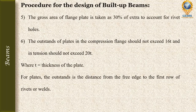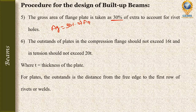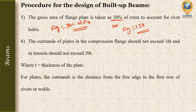After finding the approximate area of the cover plate, find the gross area of the flange plate by taking 30% extra. So if the cover plate area is 100, the gross area A_G will be 130. This 30% extra accounts for the rivet holes, since rivets are used to connect the cover plate to the flange of the section.